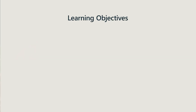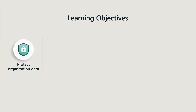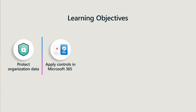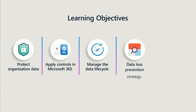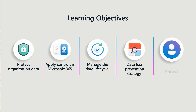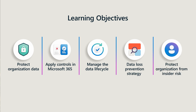By the end of this course, you'll learn how to protect your organization's data, implement controls in Microsoft 365 to protect content in environments used by AI services, manage the data life cycle effectively, maintain a data loss prevention strategy, and protect your organization from insider risk.